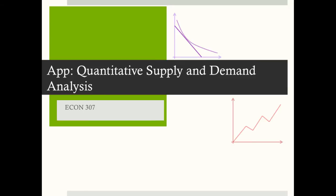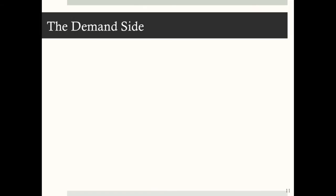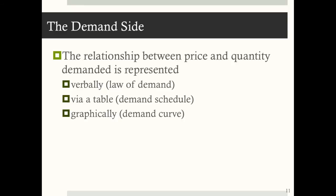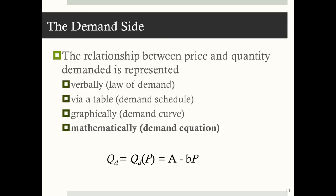Application: Quantitative Supply and Demand Analysis. On the demand side, the relationship between price and quantity demanded can be represented in a variety of ways: verbally through the law of demand, through a table called a demand schedule, graphically with a demand curve, or mathematically with a demand equation or demand function. A simple linear demand equation is written as Q sub D equals A minus B times P, where A and B are constants.